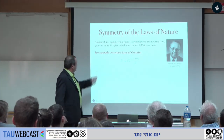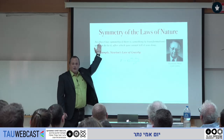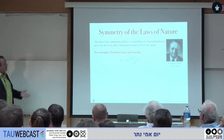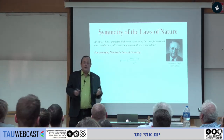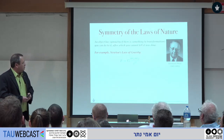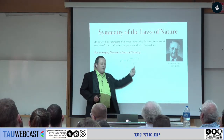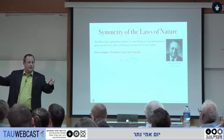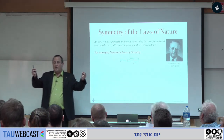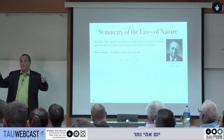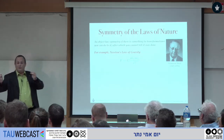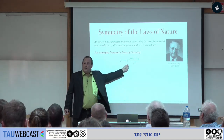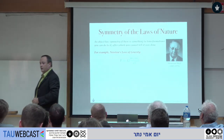This definition of symmetry applies to any object — including the laws of nature themselves. If I look at Newton's law of gravity, the strength of the gravitational pull between two objects of mass M1 and M2 is proportional to 1 over the square of the separation. If I translate the two objects in space without changing the distance between them, or rotate them, this will not affect the strength of the interaction. So we can associate symmetry operations with the laws of nature themselves.